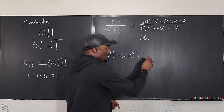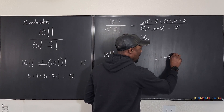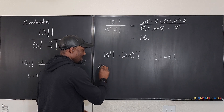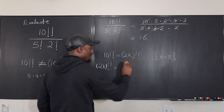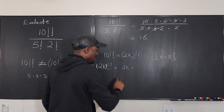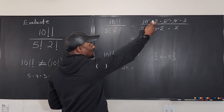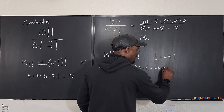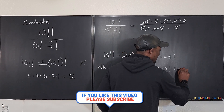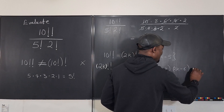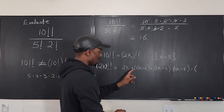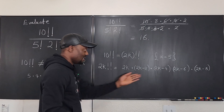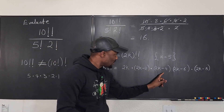So remember in this case, our k is 5. So let's say k equals 5. How do I write this out? 2k double factorial is equal to — the first number is 2k, multiplied by the next number, which is 2k minus 2 (because we go down in steps of 2), then 2k minus 4, then 2k minus 6, and the last number is 2k minus 8. Now watch what this looks like — everything here is divisible by 2. Every term has a factor of 2 in it.